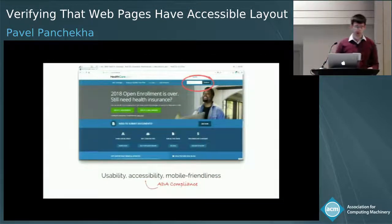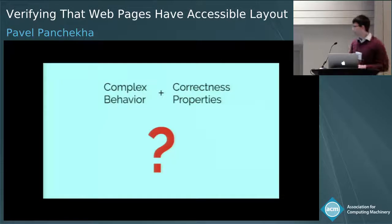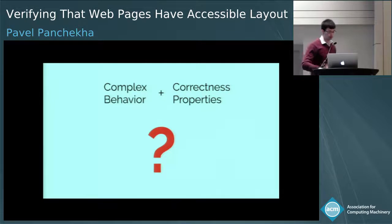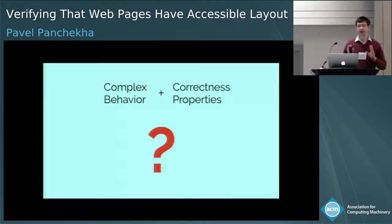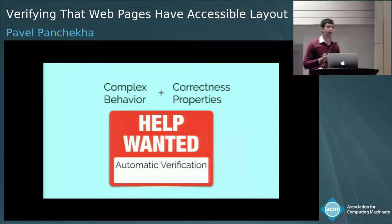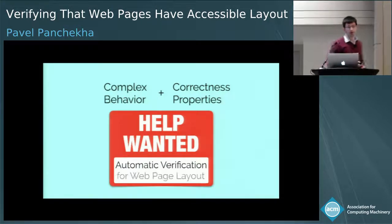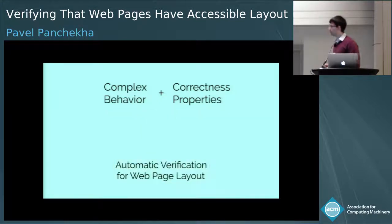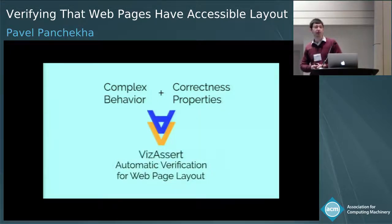So if we've got these complex behaviors across which we must ensure correctness properties, what do we do? Our community has tackled this problem in the past and come up with ideas like automatic verification of these properties. Here I'm proposing automatic verification for web page layouts. I built this tool — it's called VisAssert — and today I'll be telling you about how it works.